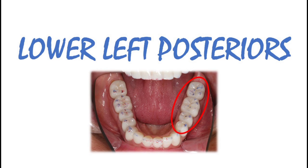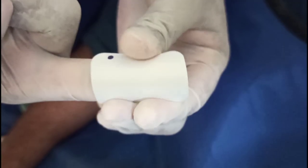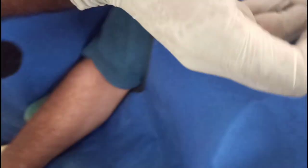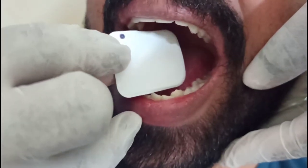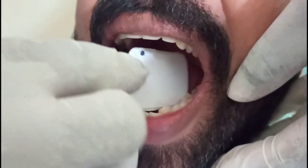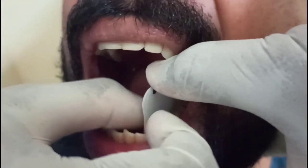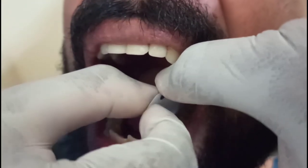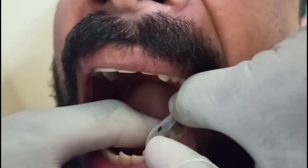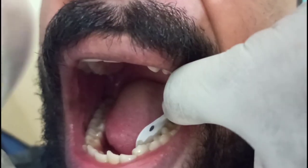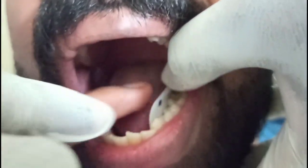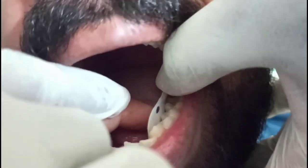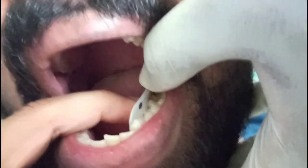For lower left posteriors: note that I am standing in the nine o'clock position with my left hand to the left side of the patient going around his head. I am placing the film inside with my right hand and then holding it with my left hand thumb on top of the film until the patient takes over to hold it.